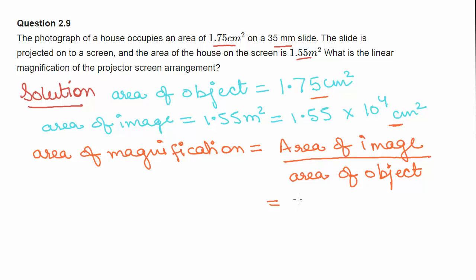Area of image is equal to 1.55 times 10 to the power 4 cm² and area of object is 1.75 cm². Calculating, we get 8857.